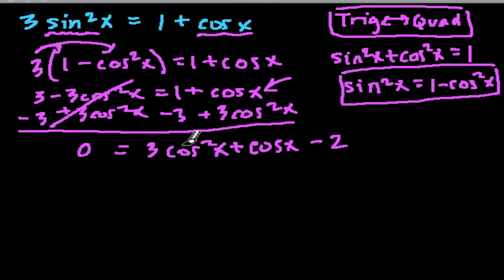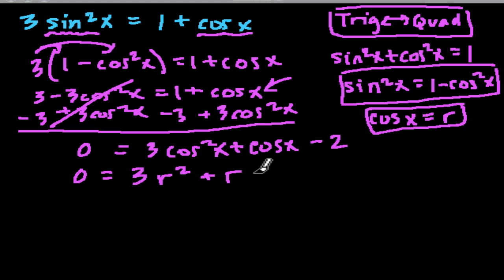And here you can see that quadratic formula starting to pop out. And I'm just going to kind of substitute cosine of x for, let's say, r. So that we have, instead of cosine of x, we're writing this with r, just it might be a little bit easier to see. So now we have 0 equals 3. Well, what is cosine squared of x going to be? If cosine of x is r, then that's r squared. And then here, instead of cosine of x, we have r and then minus 2.